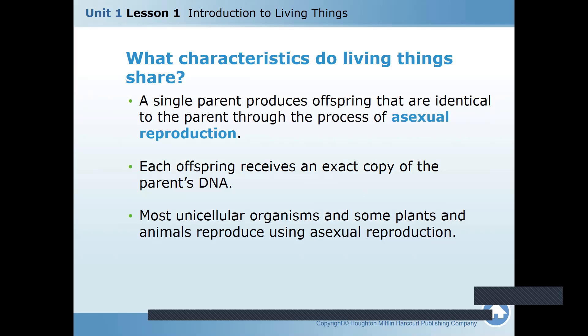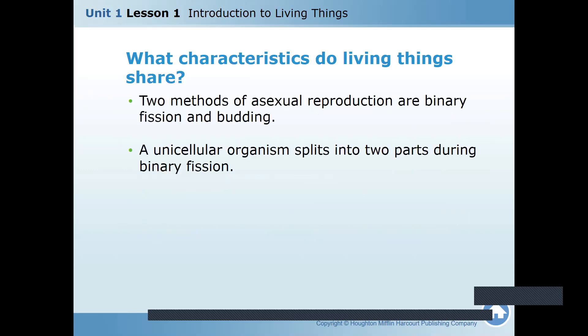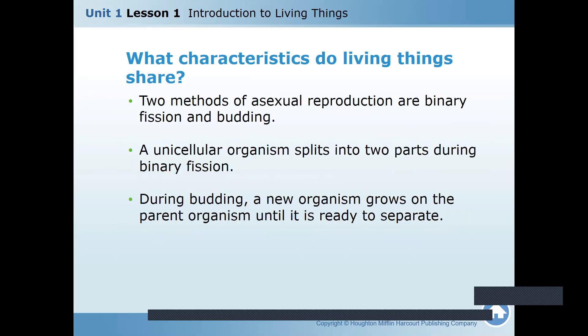So unicellular organisms and some plants — those with one cell — are usually using asexual reproduction. Two methods of asexual reproduction are binary fission and budding.